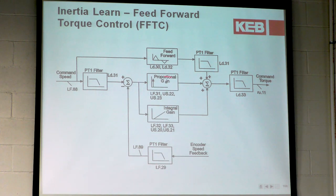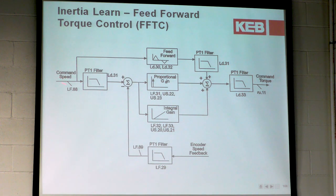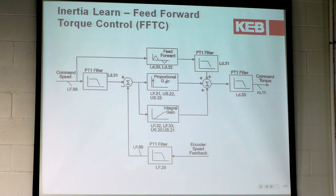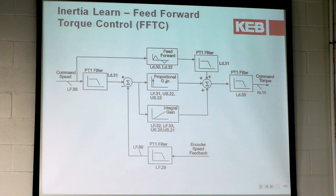Picture this diagram without the two feedforward boxes at the top — just the proportional gain and integral gain. During a run, you have a command speed that goes through an internal drive filter (LD 31), then to the gains, then out to an output filter, and finally out as the command torque. On your first speed command, there isn't going to be any error because we don't have any feedback coming back yet — say we want to go 50 feet per minute, that's what's being output.